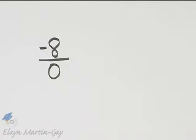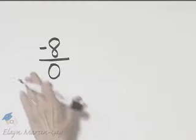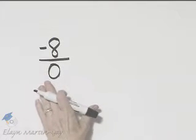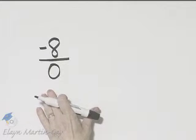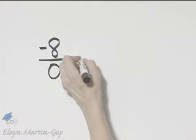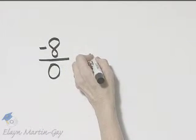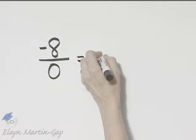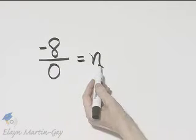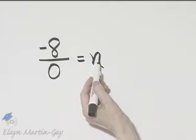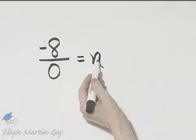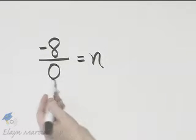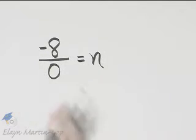Let's simplify this expression. Remember how you check division? You check division by multiplication. So let's suppose this is some number n. If it is some number n, then it must be true that this number times 0 gives a product of negative 8.